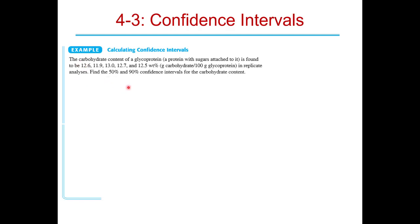Let's work through an actual example in Excel. The problem involves the carbohydrate content of a glycoprotein — a protein with sugars attached to it. The carbohydrate content was measured as 12.6, 11.9, 13.0, 12.7, and 12.5 weight percent in replicate analyses. We want to find the 50% and 90% confidence intervals.